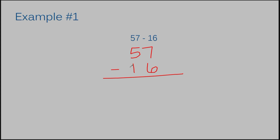I've stacked the 57 and the 16 on top of each other. The 7 and the 6 are both in the ones position of the numbers, so they end up both in the ones position when it's time to subtract. The 5 and the 1 are both in the tens position, so they end up both in the tens position when it's time to subtract also. Whenever you get your ones place lined up, it's going to automatically line up the rest of the problem.